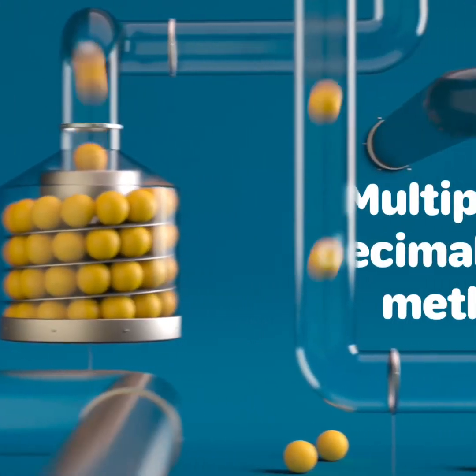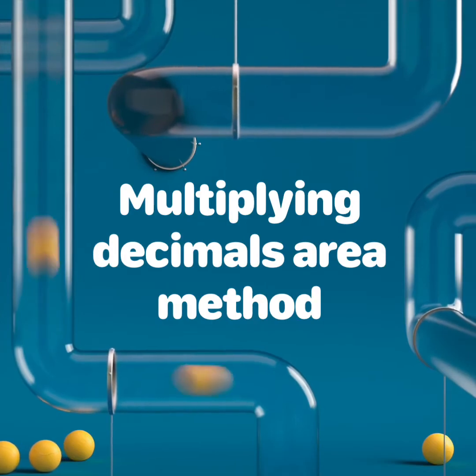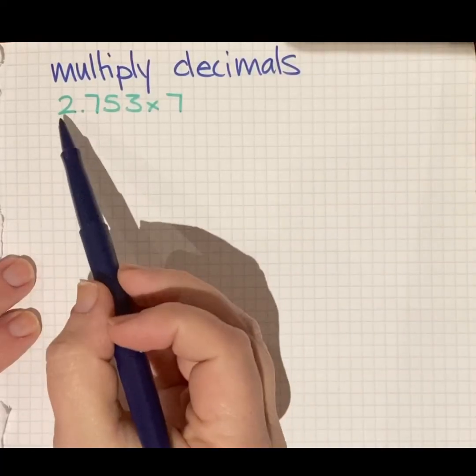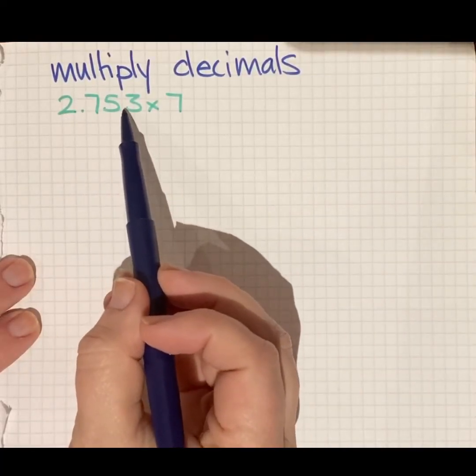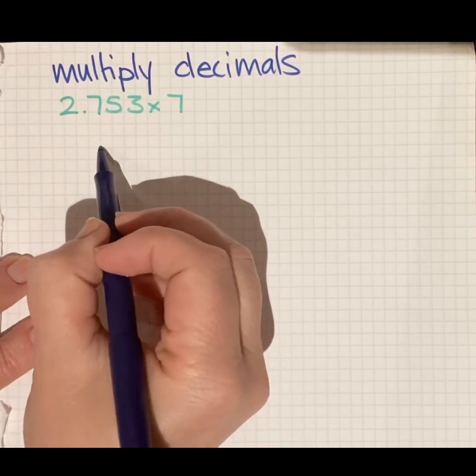All right, we're going to do multiplying of decimals using the area method. So we're multiplying 2.753 times 7. So I'm going to draw myself an area model.